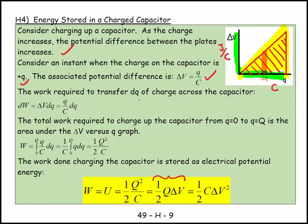The work required to transfer a little bit of charge dQ across the capacitor—a little bit of work—is equal to ΔV·dQ, which equals (Q/C)dQ. The total work required to charge up the capacitor from zero to big Q is the area under the ΔV versus Q graph. Work is equal to the integral from zero to big Q of (Q/C)dQ.